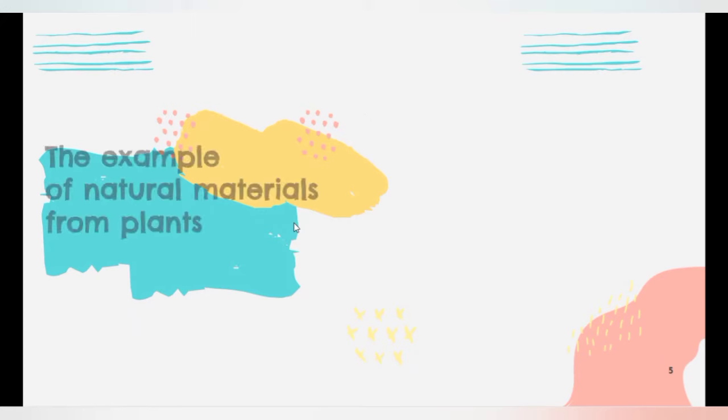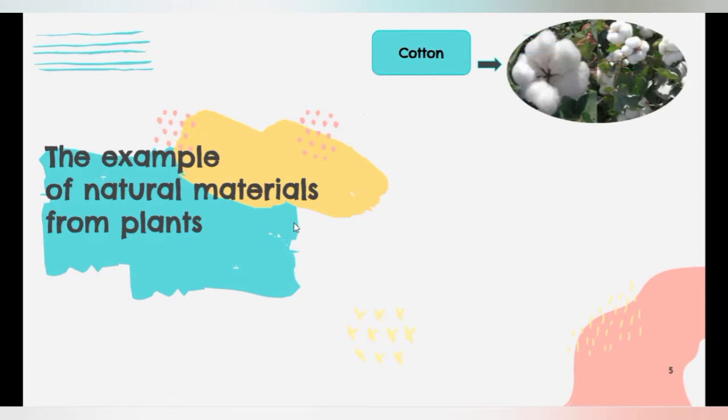Now let's take a look at the example of natural materials from plants. First, cotton. We can get cotton from cotton tree. It can be used to make cloth.